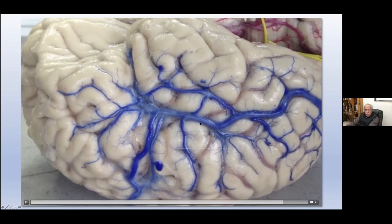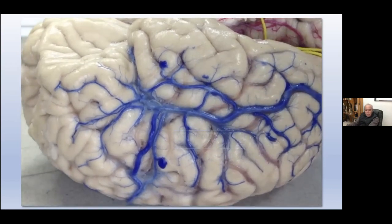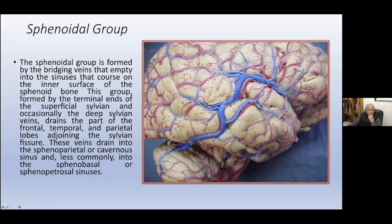If we want to make dissection of the brain, it is much better to inject it with this kind of silicone. The sphenoidal group is formed by the bridging veins that empty into the sinuses on the inner surface of the sphenoid bone. This group is formed by the terminal ends of the superficial sylvian, and occasionally the deep sylvian veins, draining parts of the frontal, temporal, and parietal lobes adjoining the sylvian fissure.